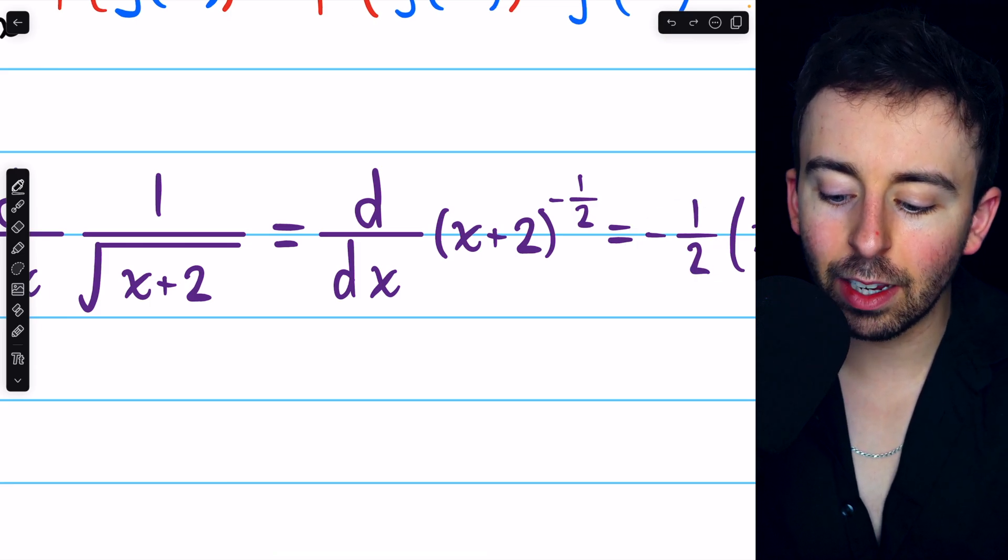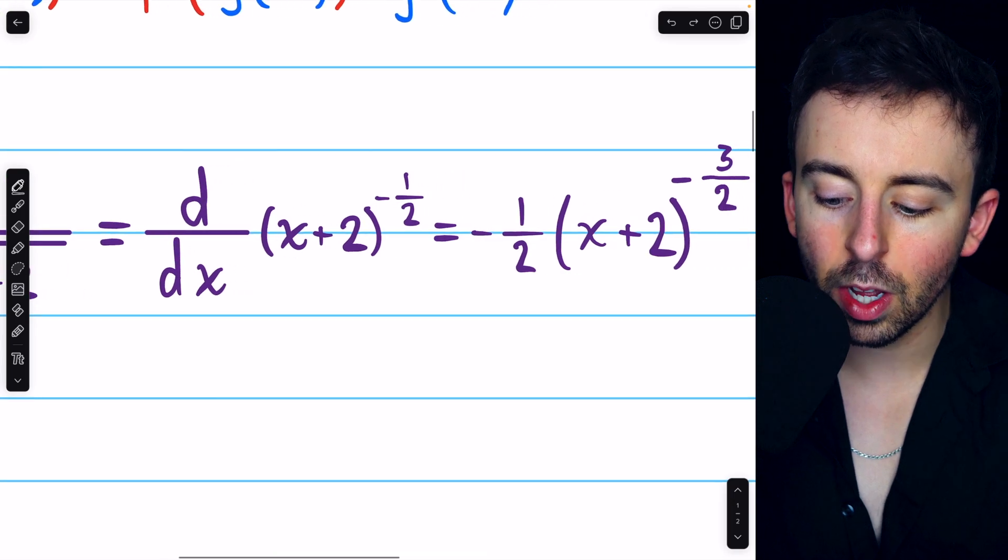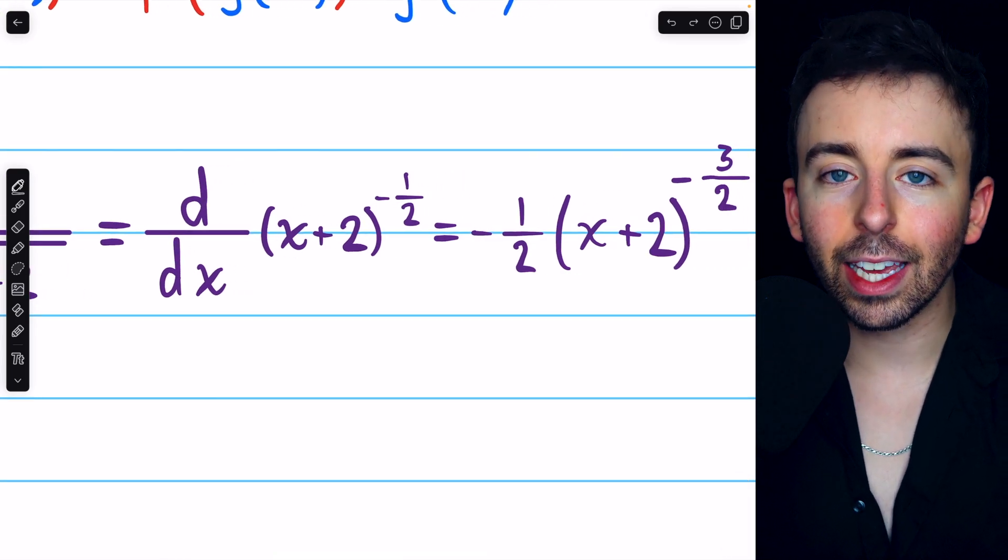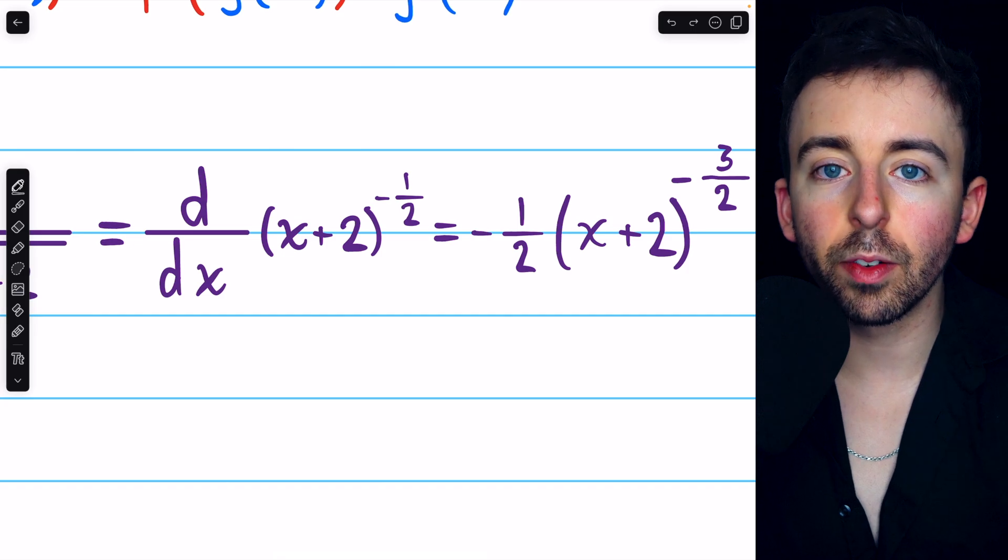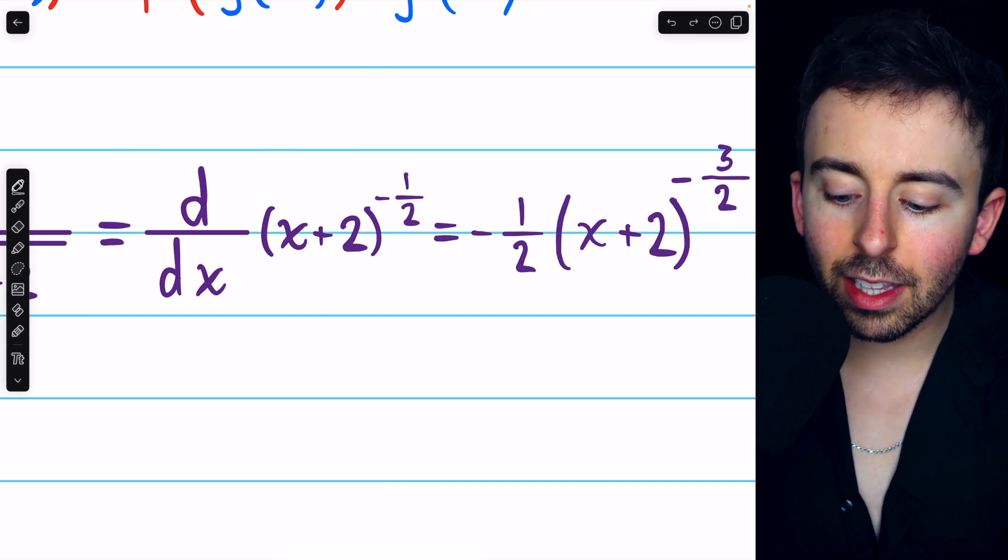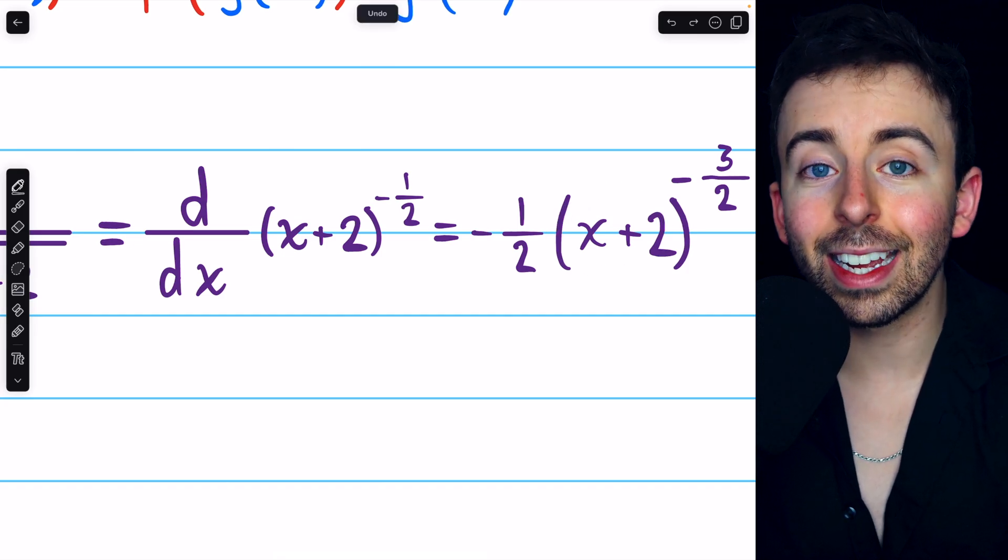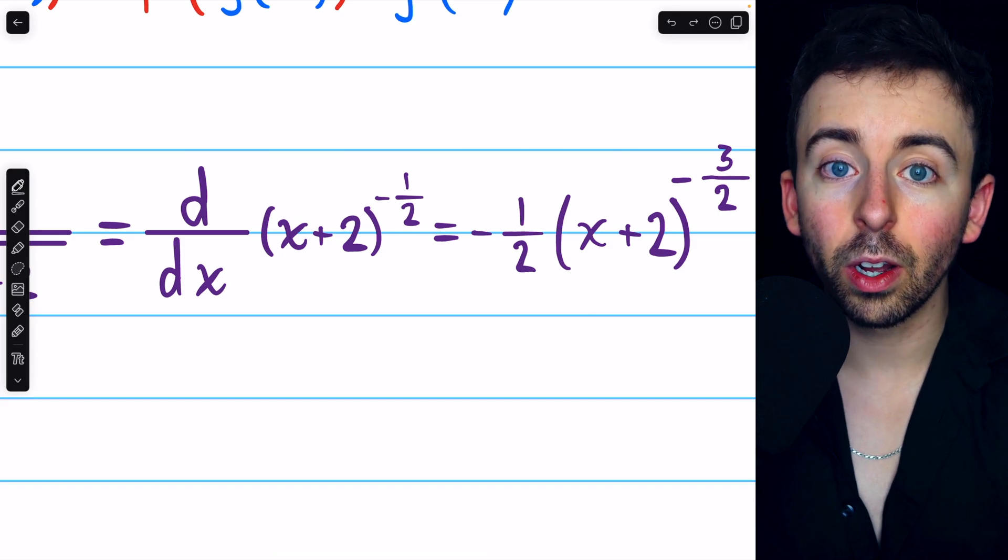So, we have negative one half times x plus 2 to the negative three halves. Finally, we must multiply by the derivative of the inside function. But the inside function is x plus 2, and its derivative is 1. So, we're done.